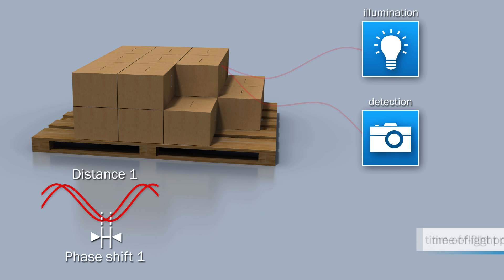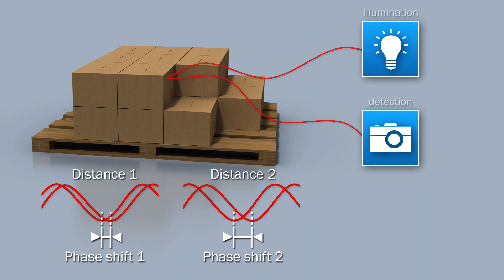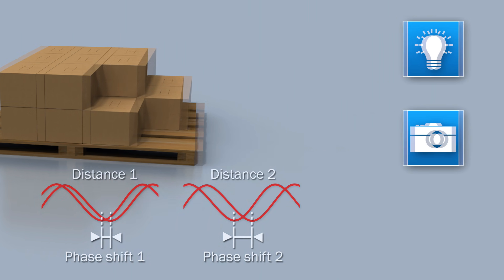The scene is illuminated by an integrated light source and the reflected light is captured by the detection optics. Due to its time of flight, the modulated light experiences a phase shift. The distance information can then be deduced from the measured phase shift.